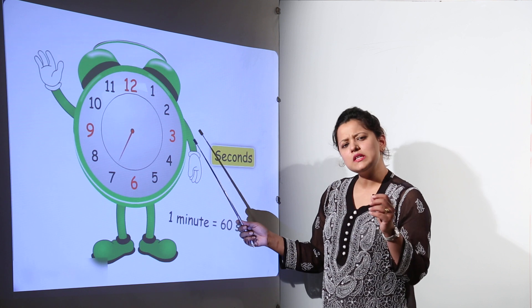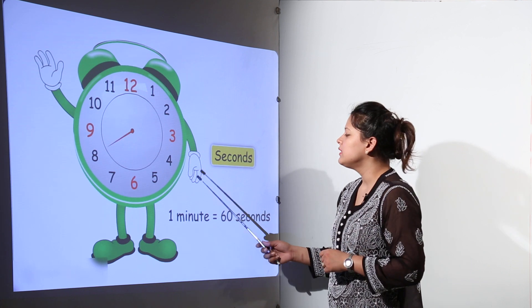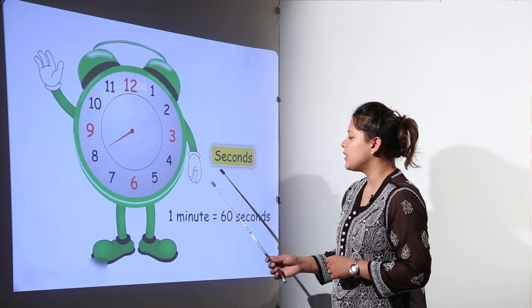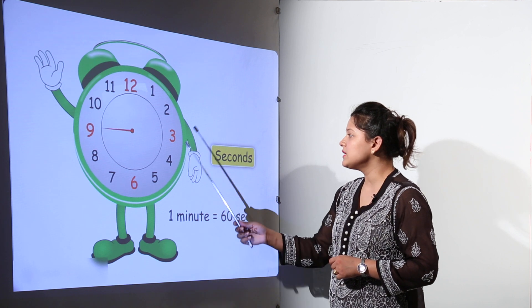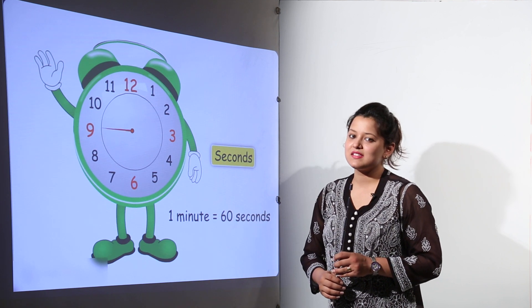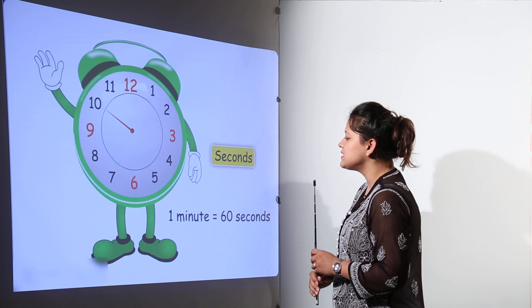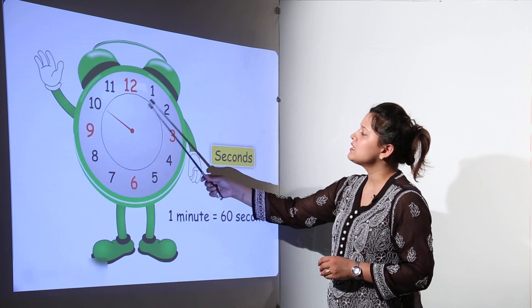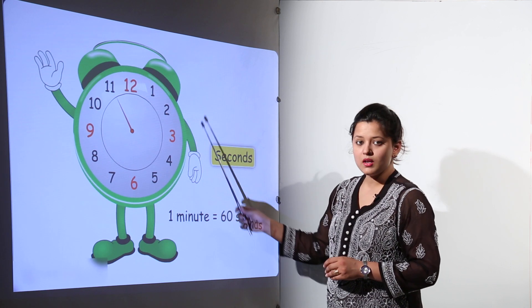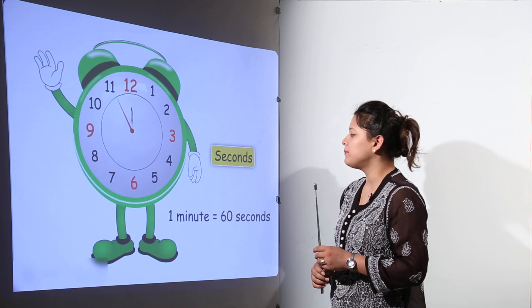If we talk about the second hand, that is the most thinnest and very long one, that moves for one second and for one minute it makes 60 seconds. In one minute we have 60 seconds. It takes one complete round to make one complete minute.